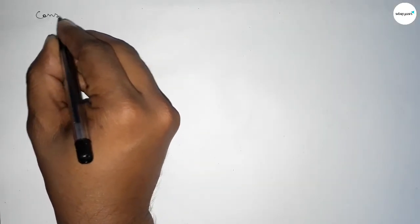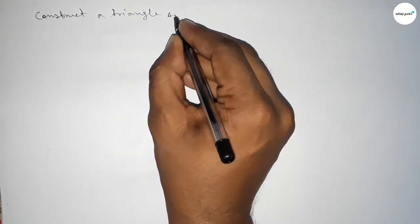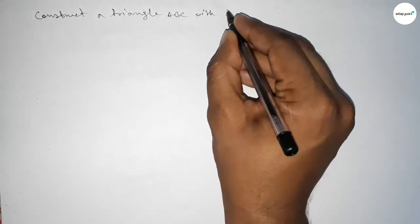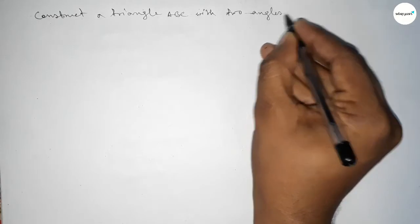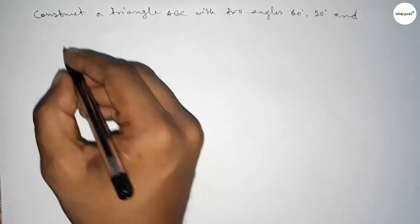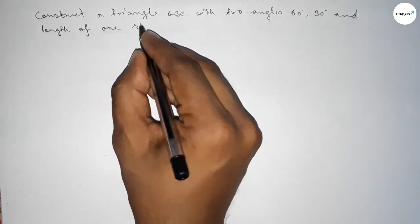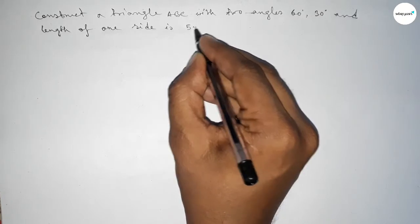Hi everyone, welcome to SizeShare Classes. Today in this video we have to construct a triangle ABC with given two angles, 60 degrees and 30 degrees, and given length of one side of the triangle is 5.5 centimeters.